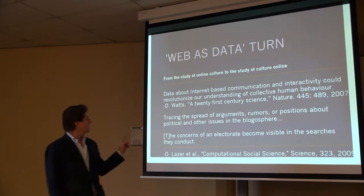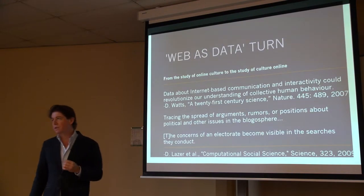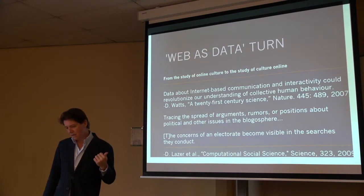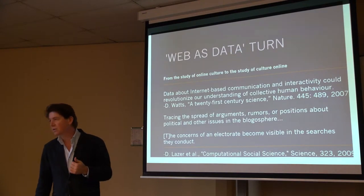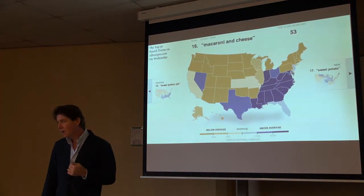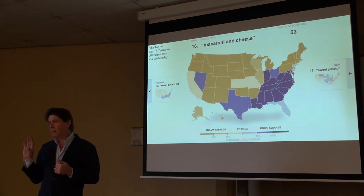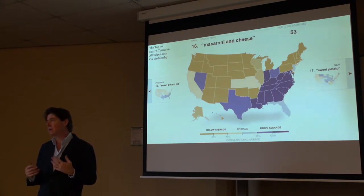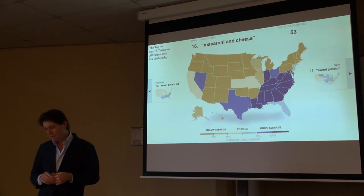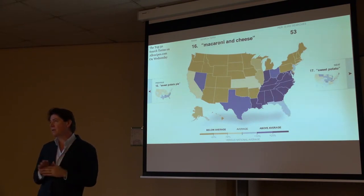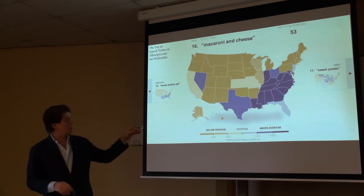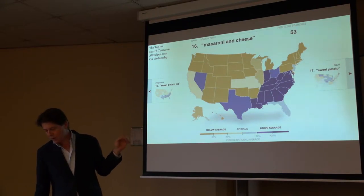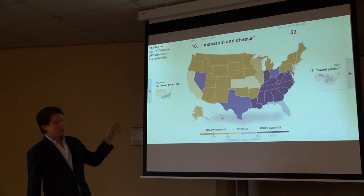Two key pieces are the one by Duncan Watts, '21st Century Science' in Nature, and by David Lazare and others in Science in 2009. Web data are being used to study not online culture, but rather culture or societal condition — this is the study of preference. From queries at allrecipes.com, you see a kind of distribution of taste. This shows where macaroni and cheese people are querying in the U.S. more so than in other places.